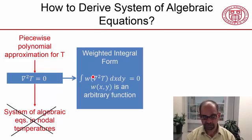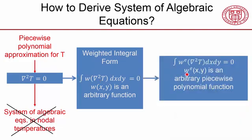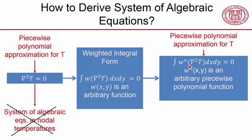We know from the 1D discussion that we cannot satisfy this for any arbitrary weighting function because we assumed a shape for T. So we'll satisfy it for a weighting function for which we pick a shape. We pick a shape for T element by element, we pick a shape for W, and then integrate over the domain.